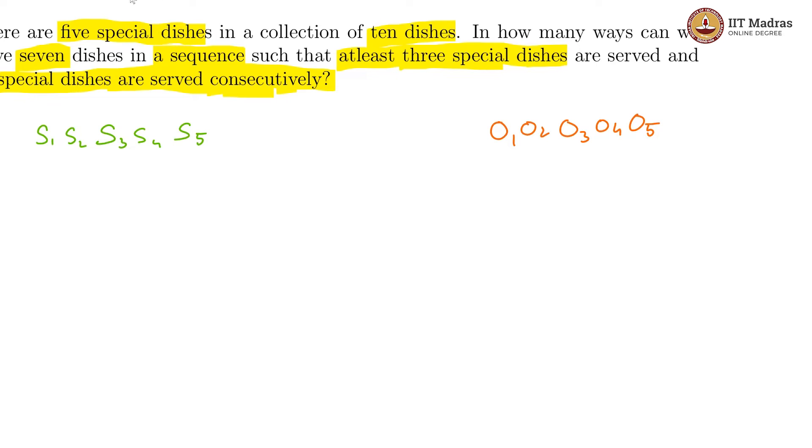We consider the 3 cases which are case 1. Let us consider the easiest one which is 5 special and 2 ordinary. Before we look at the permutations, the ordering, let us see how many ways we can pick these dishes in the first place without any sequencing. There is only one way to pick the 5 special dishes because there are only 5 special dishes.